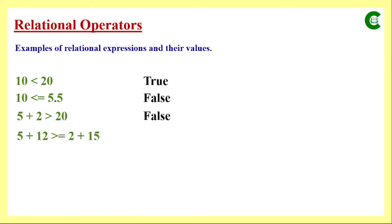In the next example, we have an arithmetic expression on the left side and another arithmetic expression on the right side. Both arithmetic operations are processed first as per their associativity, and then the relational operation works. Here we have a greater-than-or-equal-to sign. On the left side, we will finally have 17, and on the right side also we will have 17. Since both values are the same and we have greater than or equal to, the evaluation result will be true.